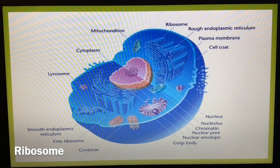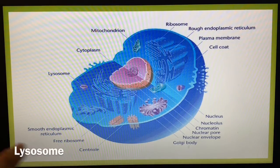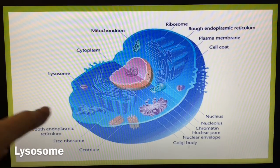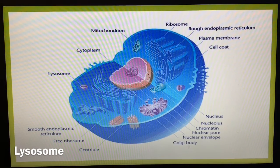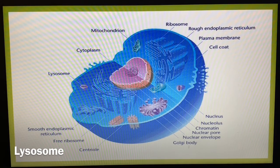Ribosomes are located within the cell and are the sites of protein synthesis. Lysosomes are located here as well. Lysosomes are small vesicles that originate at the Golgi complex. They contain lysozyme and other digestive enzymes that break down foreign materials taken into the cell.